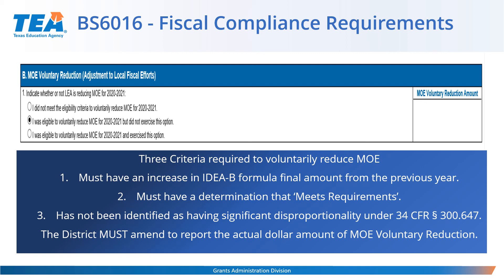If the district is undecided about voluntarily reducing MOE, keep in mind that the planning amount is released in June and the final amount in December. If the district chooses to wait until final amounts are released to decide, they may select either 'I did not meet the eligibility criteria to voluntarily reduce MOE in 2021-22' or 'I was eligible to voluntarily reduce MOE in 2021-22, but I did not exercise this option.' When final amounts are released in December, compare last year's final amount with the current year's final amount, and if changes are required, amend the application to update the MOE voluntary reduction.